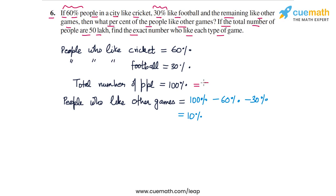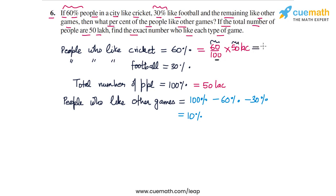We're also told that the total number of people are 50 lakh, so 100% equals 50 lakh people. People who like cricket, which is 60%, will be 60/100 of 50 lakh. 60 times 50 is 3000, and 3000 divided by 100 is 30. So this equals 30 lakh.